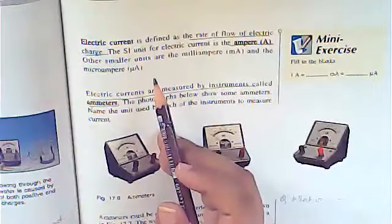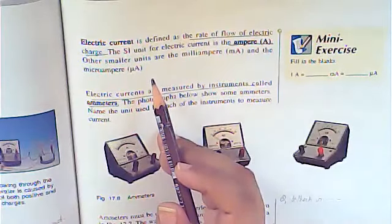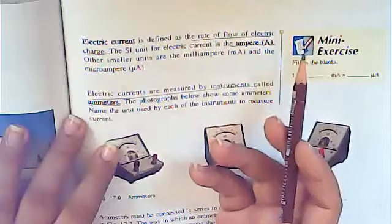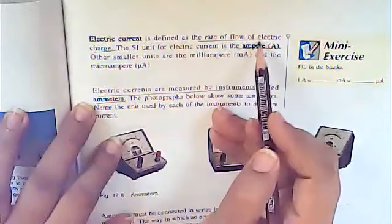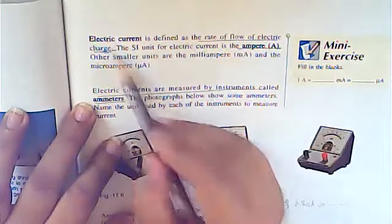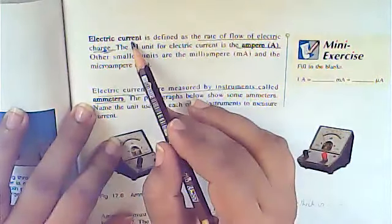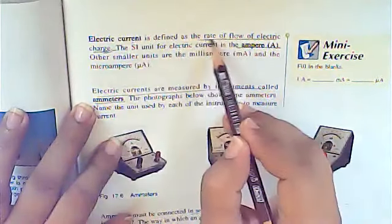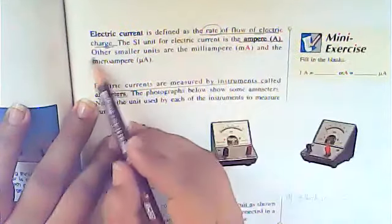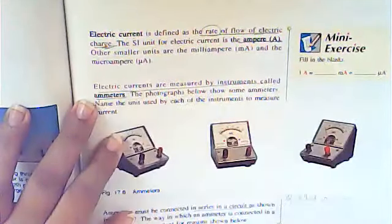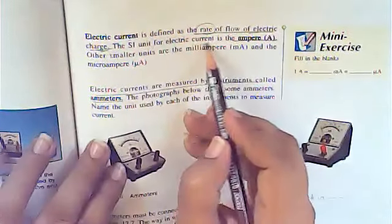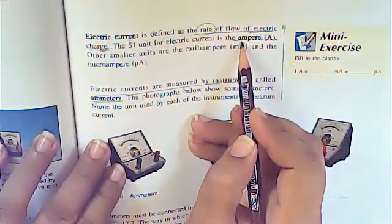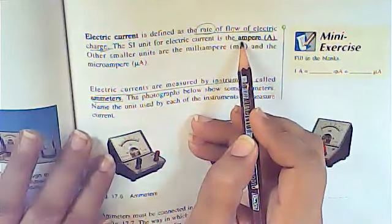Some important definitions that can be asked in MCQs, true/false, or question-answer sections: electric current is defined as the rate of flow of electric charges. At what rate electric charges are moving throughout the circuit — that rate is basically called electric current.